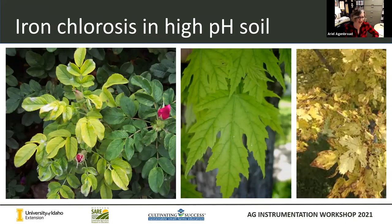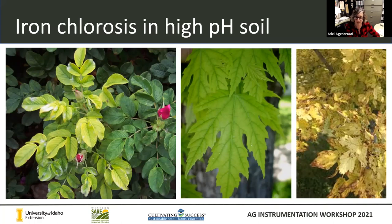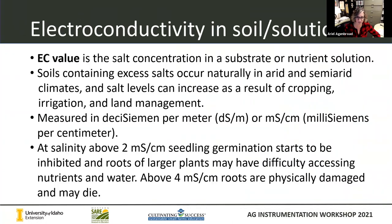Our soil test may come back showing plenty of iron present in that soil, so why are we seeing symptoms? In that high pH range, the iron becomes unavailable to the plant in solution. We see yellowing, the characteristic green veining, and on the far right we start to see necrosis and dieback become pretty significant. Those of us who have worked in horticulture know: if someone calls and says they have a red maple, an aspen, or a river birch doing these things, one of our first responses is that the pH is just not right for that species. Plant selection is really your best bet — not using those plants.